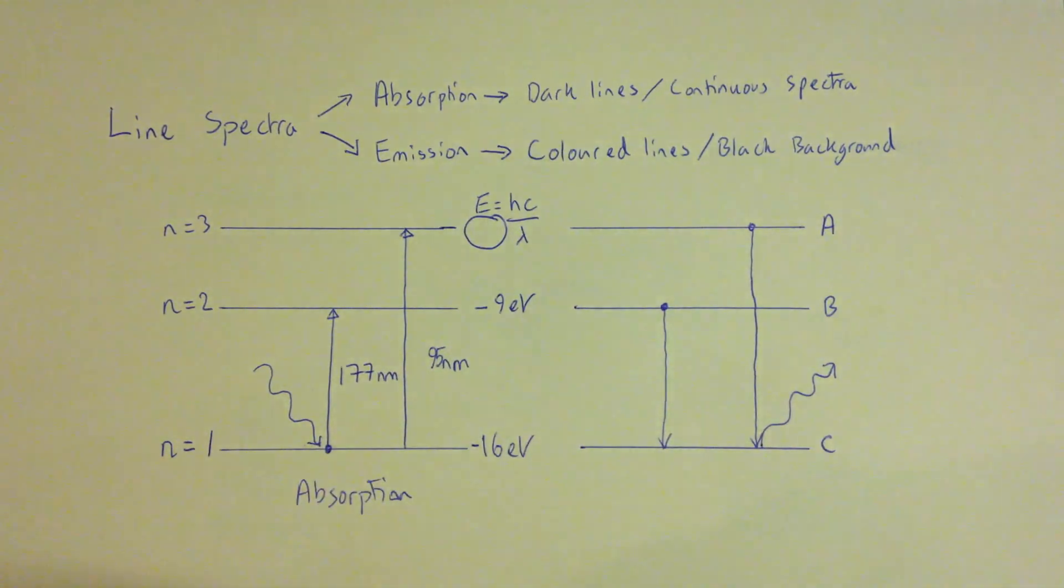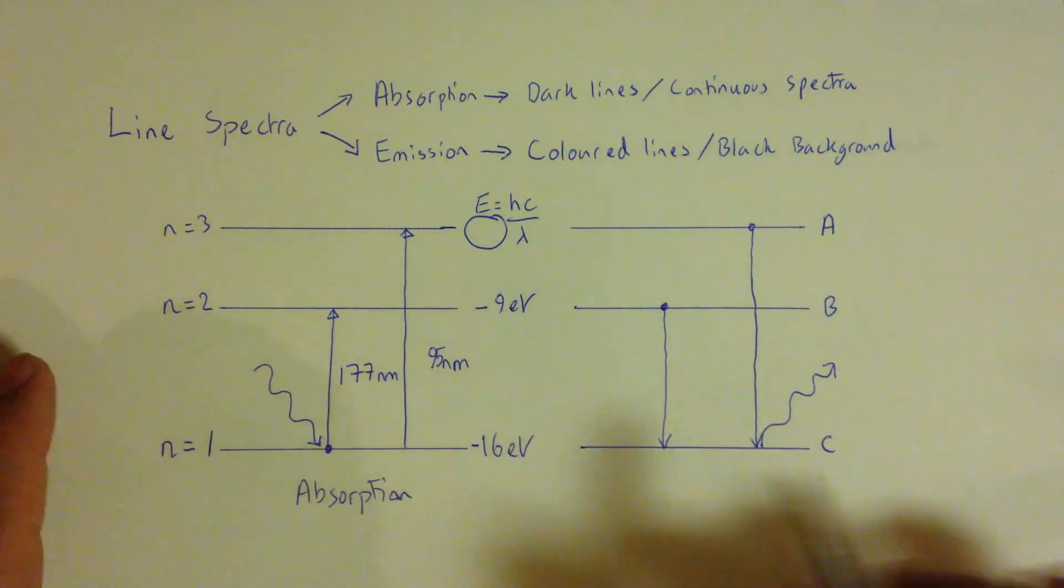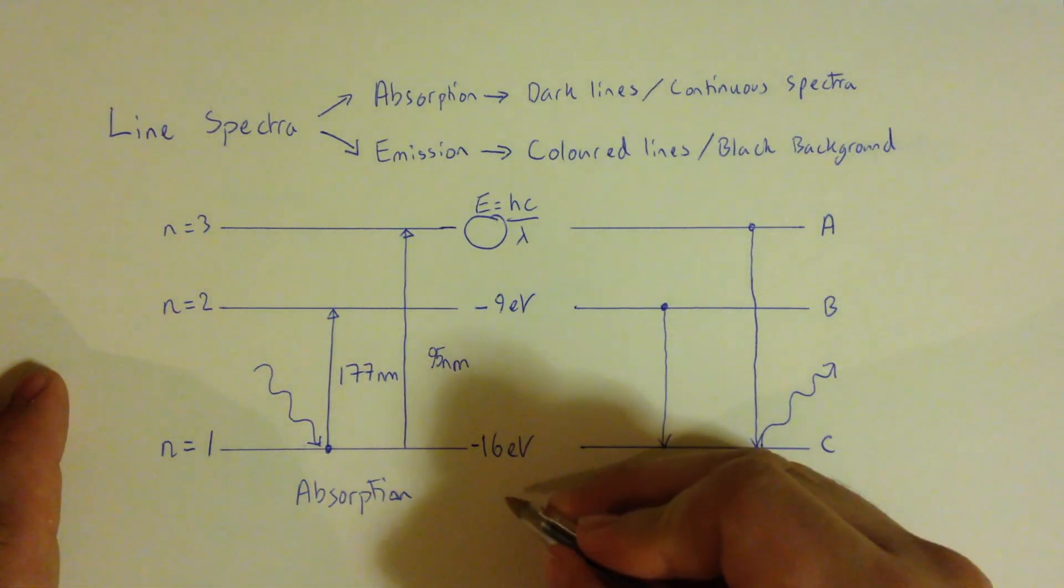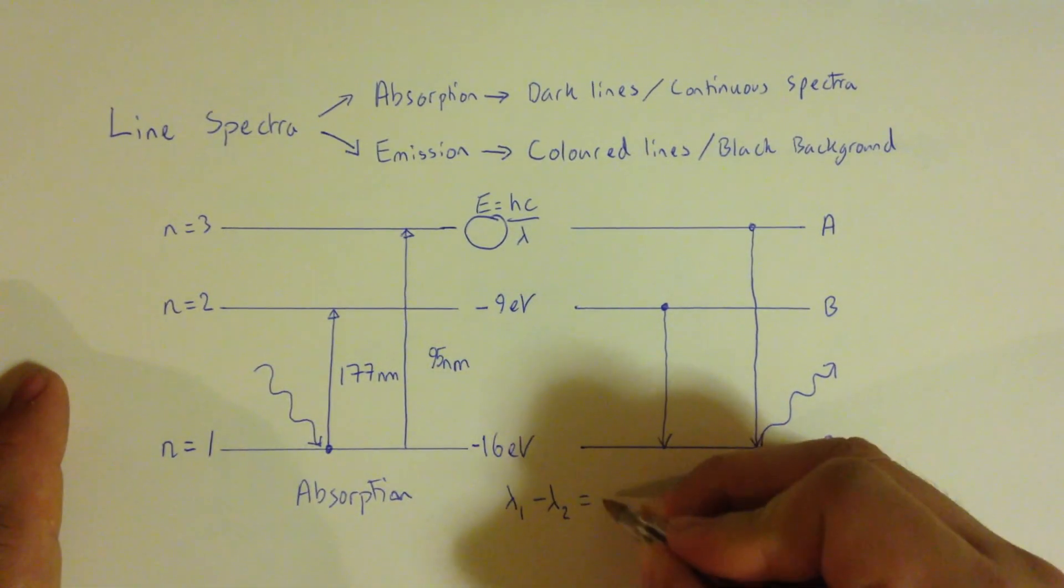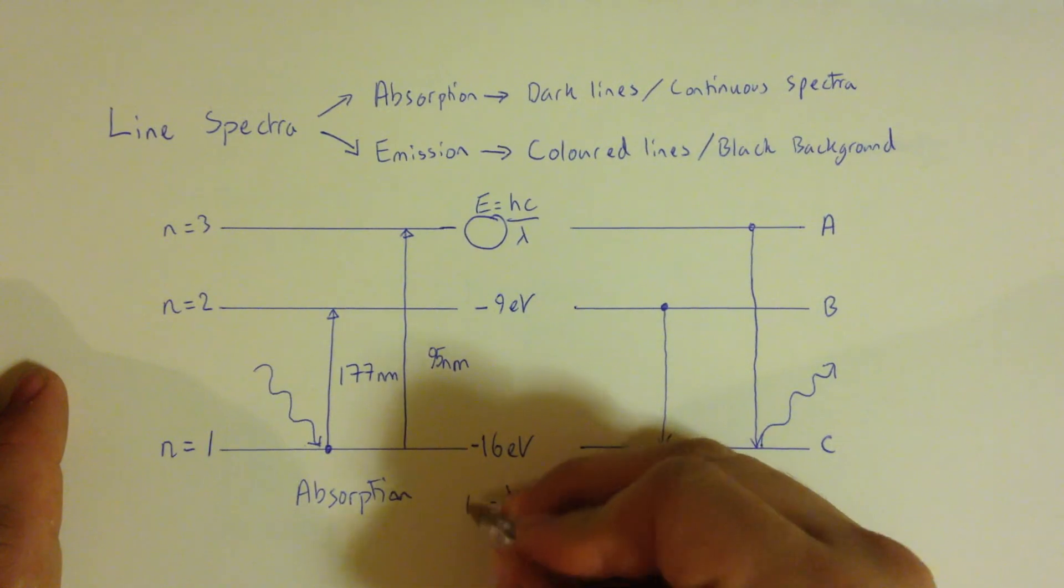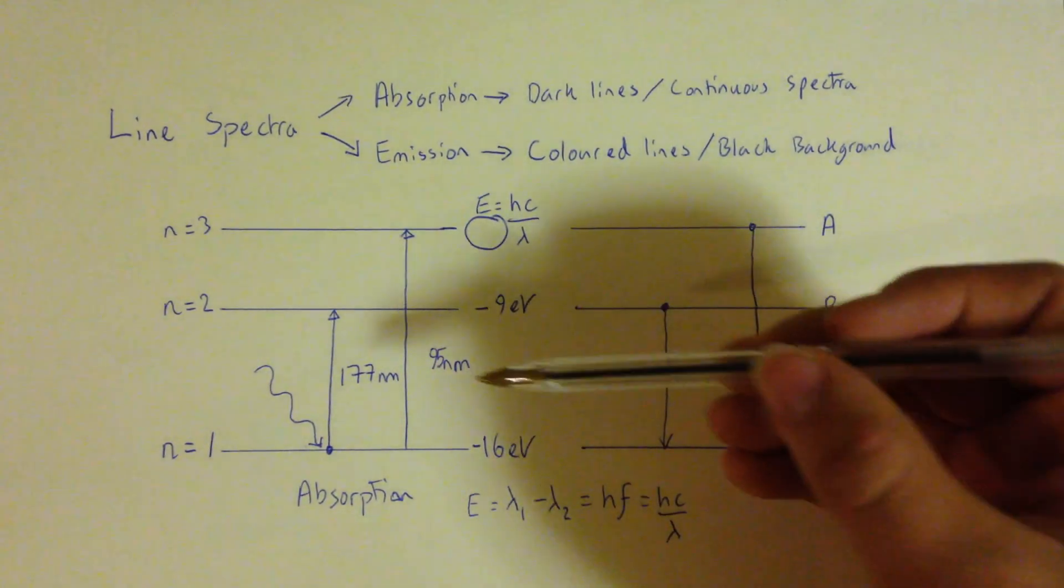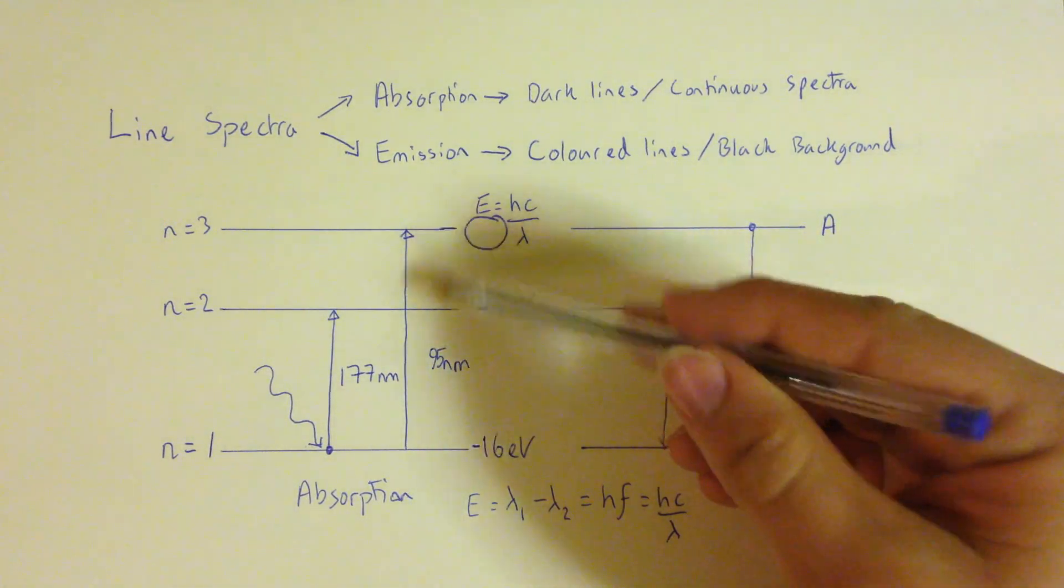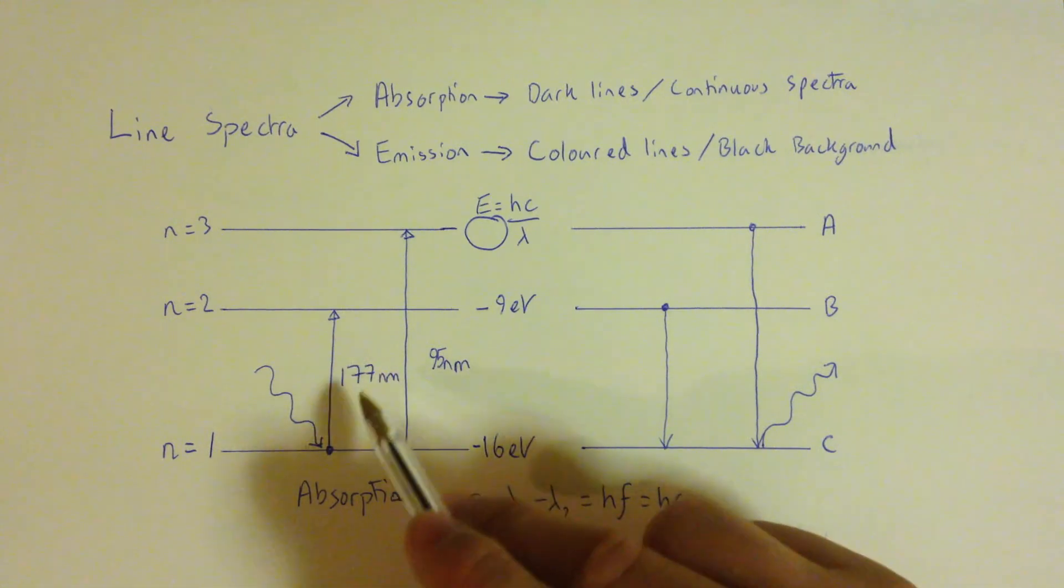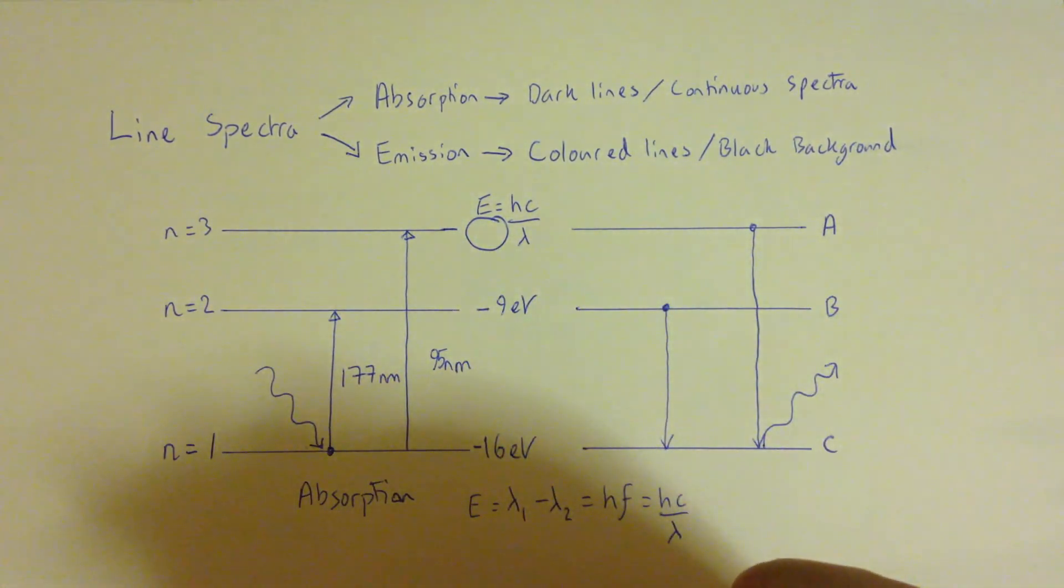That does not necessarily have to be the energy of zero, where it reaches the ionisation energy, because this diagram may not be complete. So the way we'd go about tackling this problem is we have to take away the energies of the two levels. So it's going to be the difference in wavelength between the two is going to be equal to Hf, which is equal to Hc over lambda. So that corresponds to the energy between them. So we've been given an energy here for the entire transition. So what we need to do is we need to take away the energy of 95 nanometres and take away from that the energy corresponding to 177 nanometres.